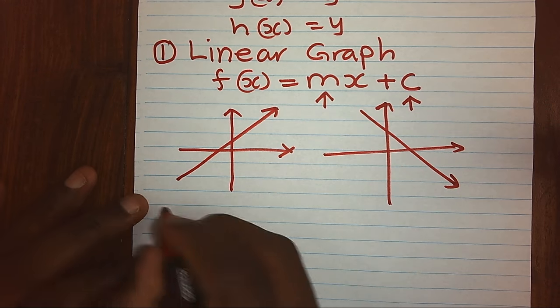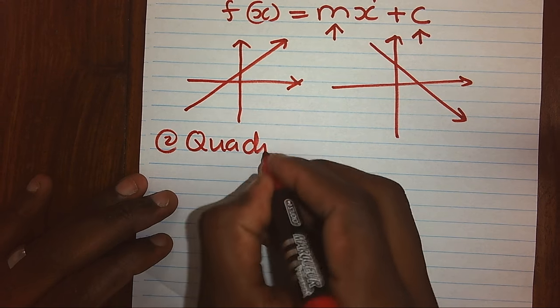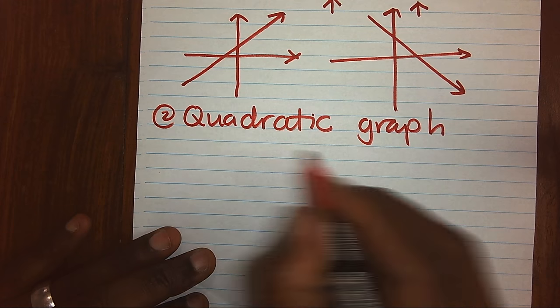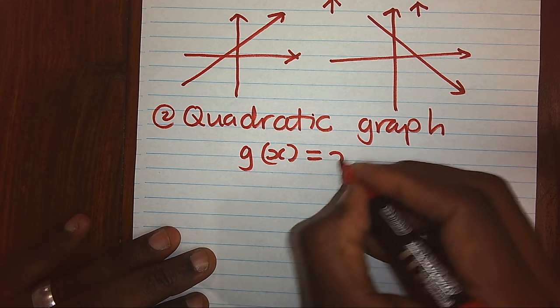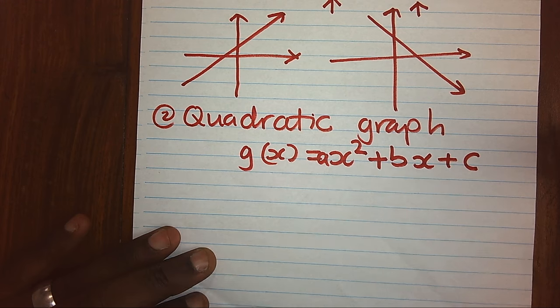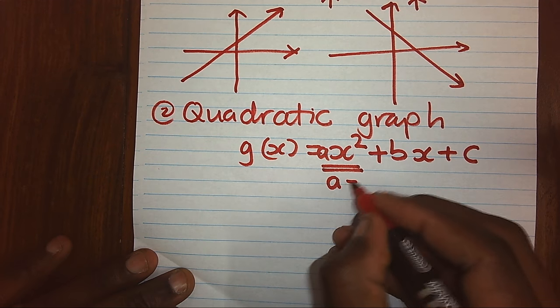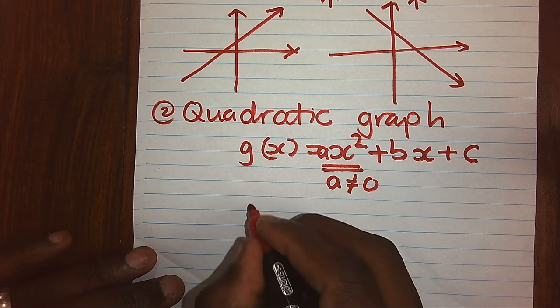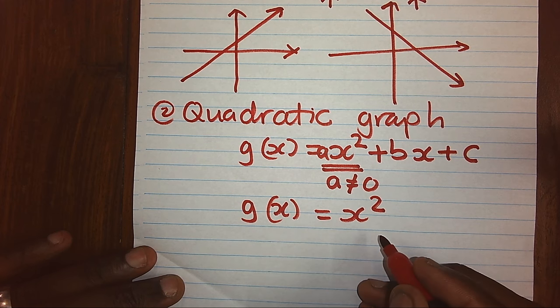We also have what we call a quadratic graph. A quadratic graph function can be given as y equals ax squared plus bx plus c. However, for it to be called quadratic, the value of a must never be zero. Even if it's just g of x equals x squared, it's also a quadratic graph. The quadratic graph is also known as a parabola.